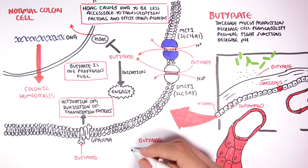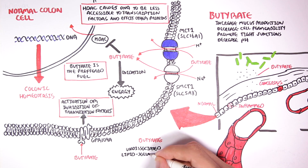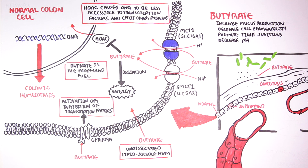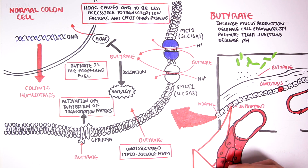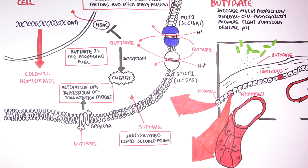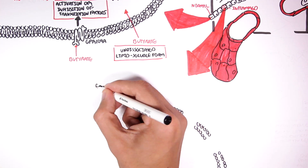If butyrate is in an undissociated form — which is a lipid-soluble form — it can enter the cell by diffusion through the plasma membrane without receptors or transporters. Apart from helping maintain homeostasis in the colon, butyrate can exert direct anti-inflammatory effects. The colon cells are permanently in close association with trillions of microbes and their products. Therefore, the colon cells must have some form of response to this potential challenge, and this response is inflammation.